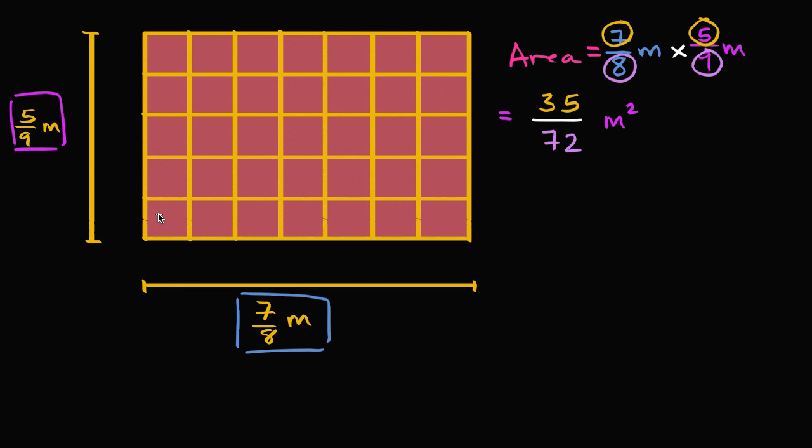In each column, you have 1, 2, 3, 4, 5 of these rectangles. So we have 5 times 7 of these rectangles. So we have 35 rectangles. And what's the area of each of those rectangles?